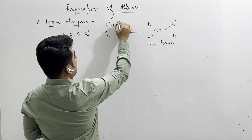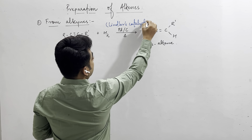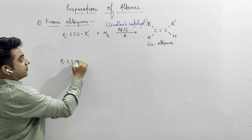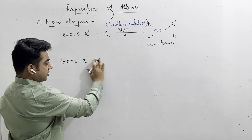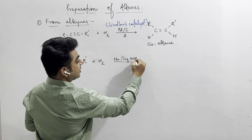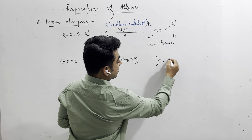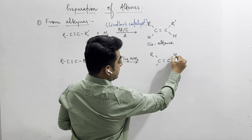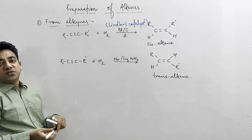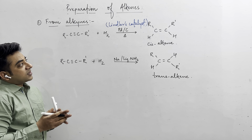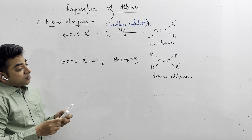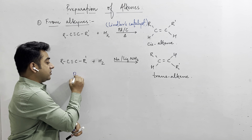Lindlar's catalyst gives cis alkene on reduction of alkynes. Whereas if the reduction is carried out with sodium or lithium in liquid ammonia, the reaction is known as Birch reduction, and this gives trans alkene as the product.